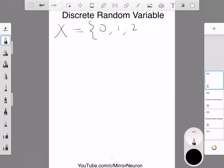We can also say, what is the probability that our random variable X is equal to 0? So we saw from our calculation that it's 1 by 4, right?